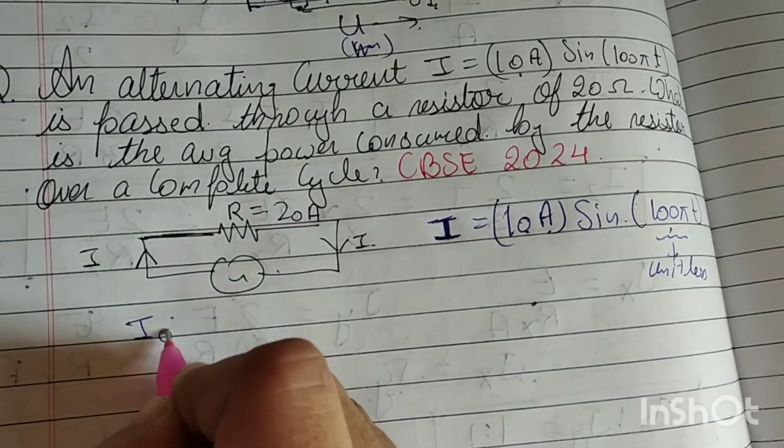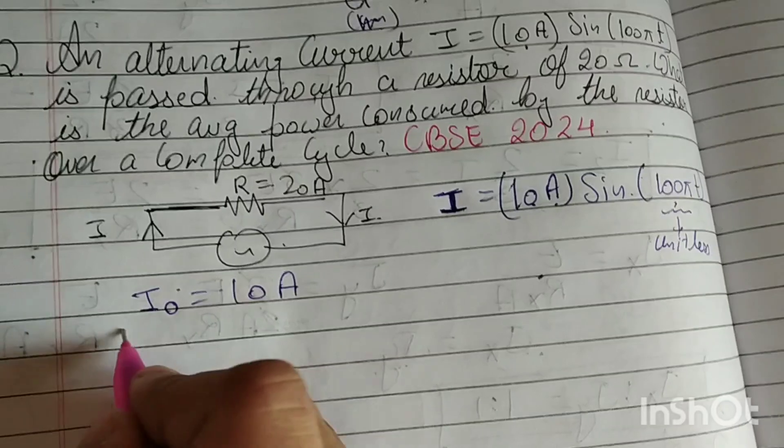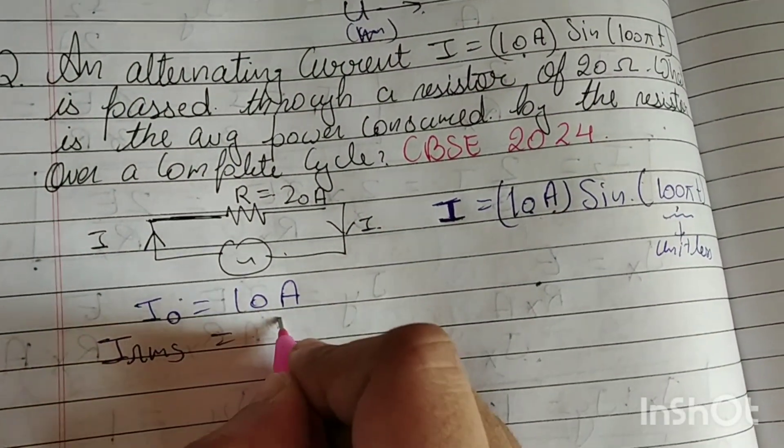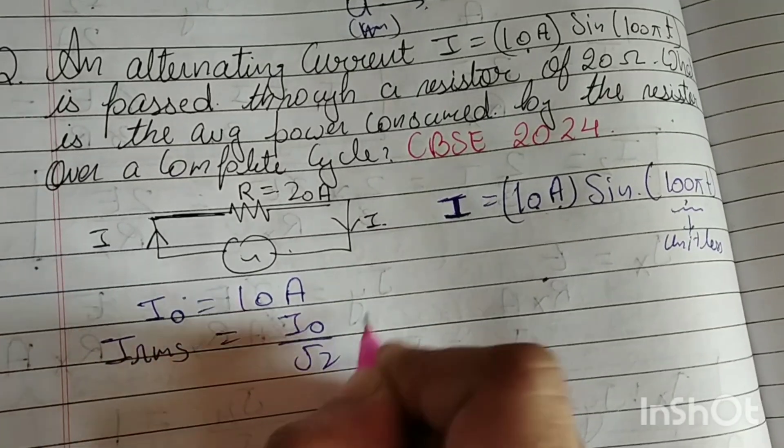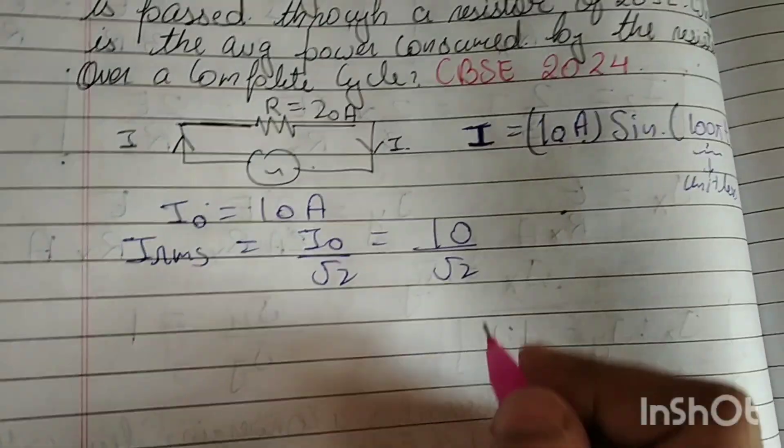This means i naught value is 10 amperes, correct. Now we will find i_rms because this is the current peak value. So i_rms will be i_naught by root 2, so i_naught value is 10 by root 2 amperes, correct.